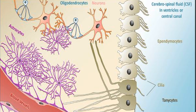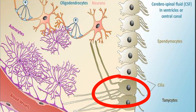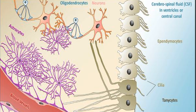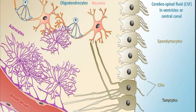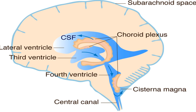The second group of ependymal cells is tanycytes. They line the floor of the third ventricle over the median eminence of the hypothalamus. They have processes that extend deep into the hypothalamus, and these processes have special functions we will learn about later.